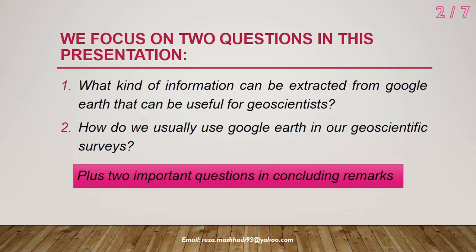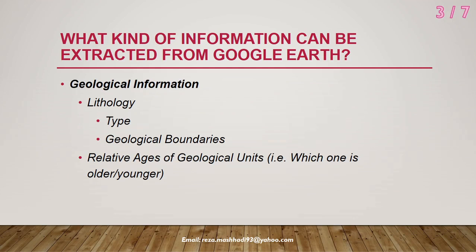In terms of information extraction from Google Earth, we can extract geological information — we can extract lithology, detect geological boundaries and the types of lithologies. For example, igneous rocks sometimes create rough surfaces, and limestone units or physically strong, erosion-resistant units represent rough topographic surfaces.